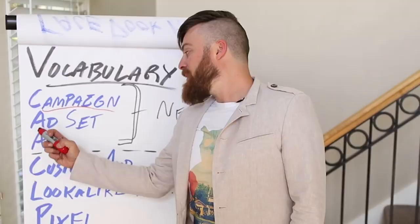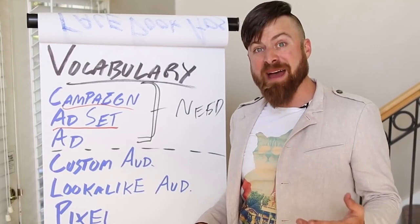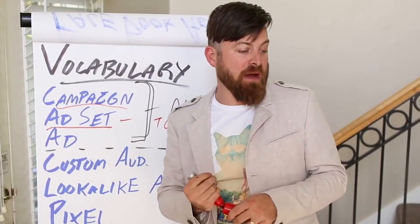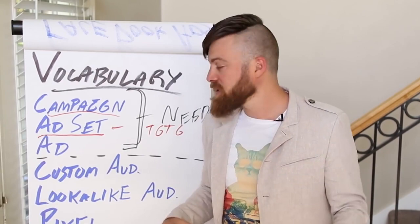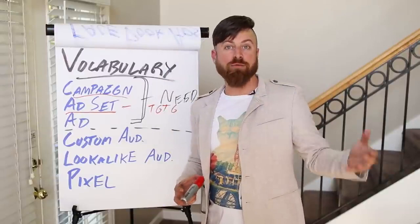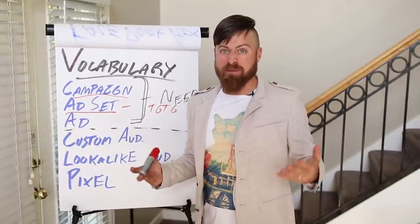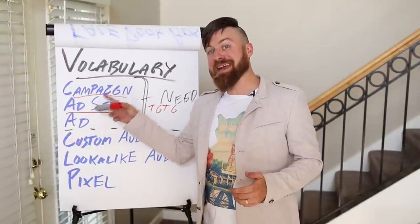The next term is an ad set. An ad set is where all the magic happens — it's where you define the targeting for the ad and who the ad gets shown to. If I'm selling markers, I'd need to target people interested in markers, whiteboards, or who do presentations — maybe teachers. If you're showing ads for dog toys to cat people, you're not going to make any money. A lot of stuff happens at the ad set level: the targeting.